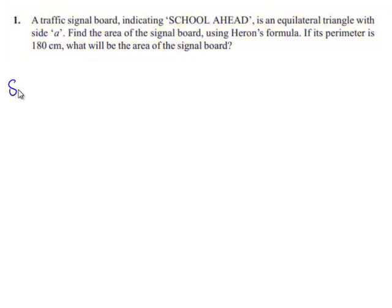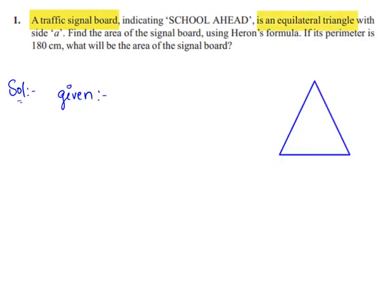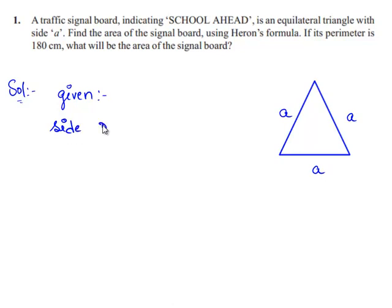So first let us write the given data. The traffic signal board is an equilateral triangle, and its side is given as A. Therefore, the side of the equilateral triangle is equal to A.